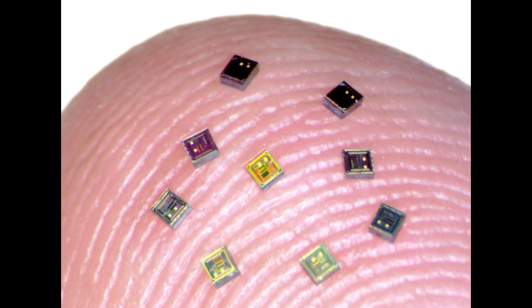The sensors, dubbed neurogrinds, independently record the electrical pulses made by firing neurons and send the signals wirelessly to a central hub which coordinates and processes the signals.